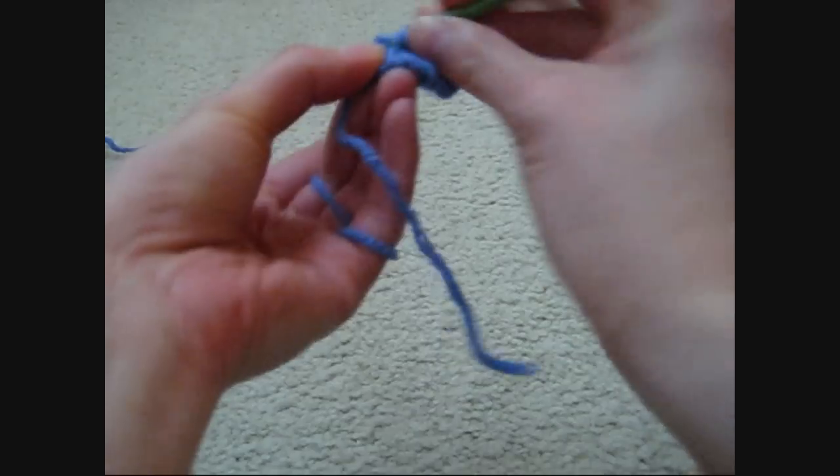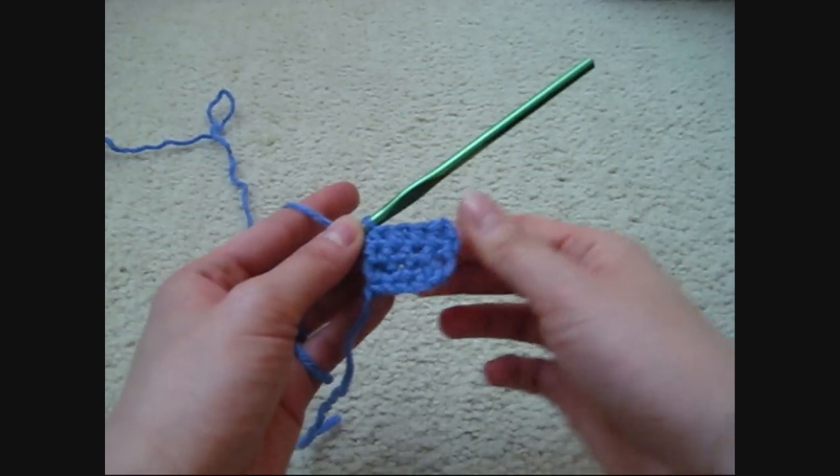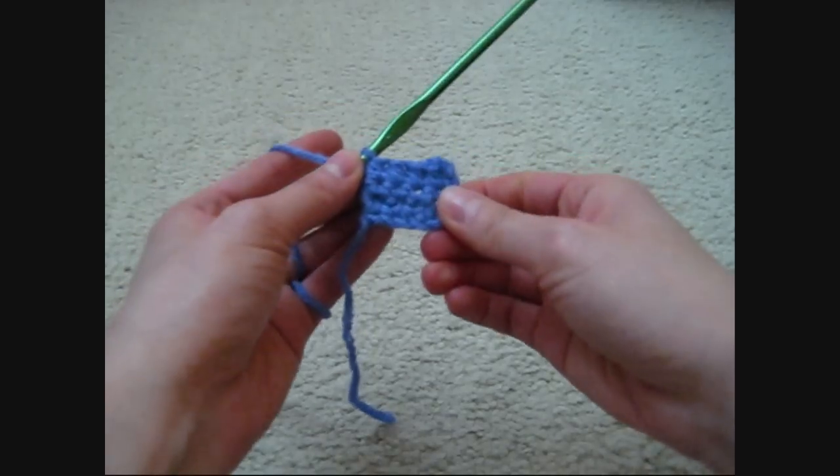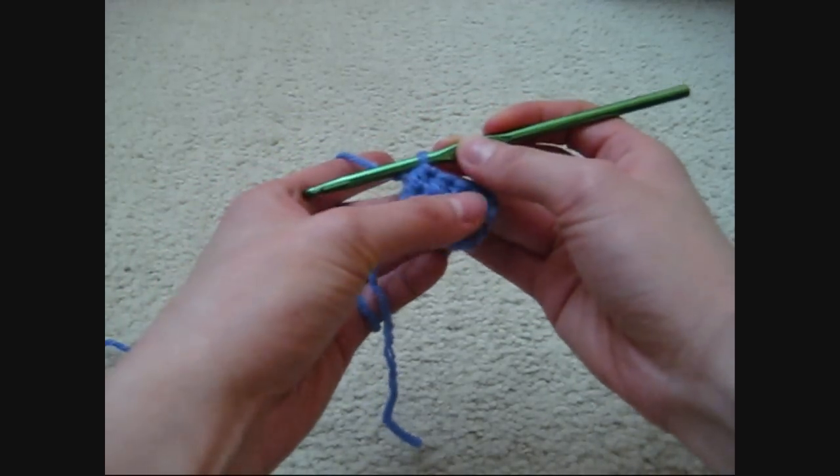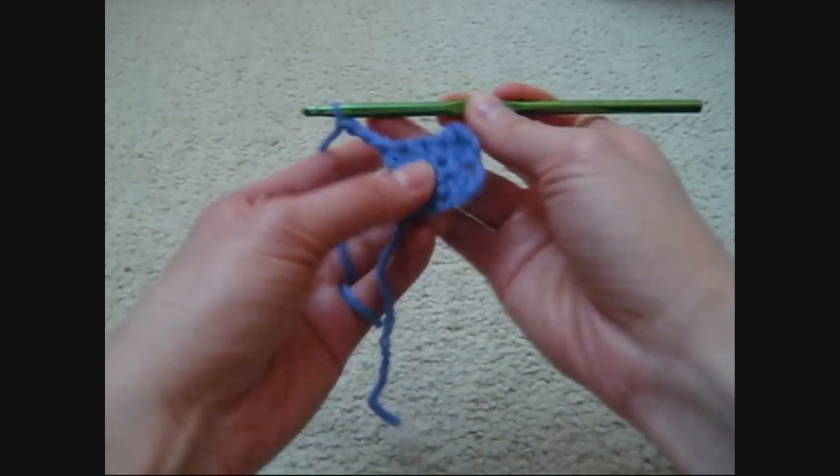The next one is called the double crochet. For the double crochet, you have to chain 3 after the first row—1, 2, 3.